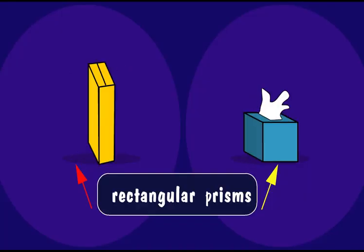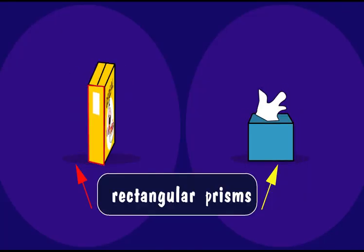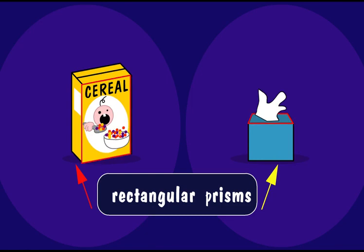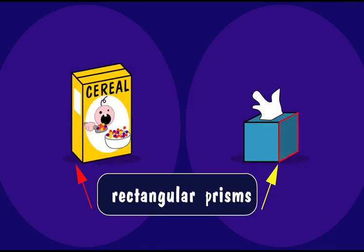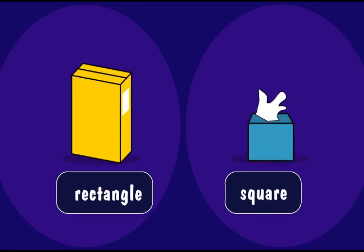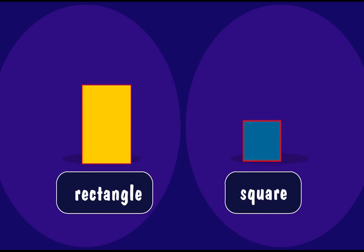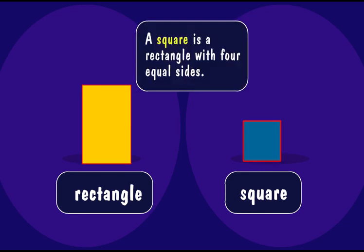Look. These boxes have flat parts or faces shaped like rectangles and are called rectangular prisms. These boxes each have six faces shaped like rectangles or squares. Remember, a square is a rectangle with four equal sides.